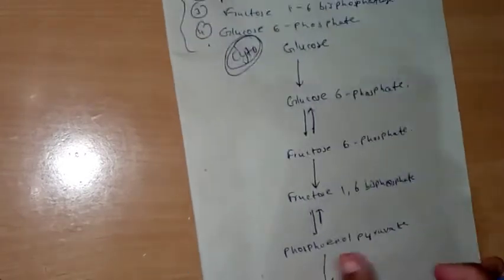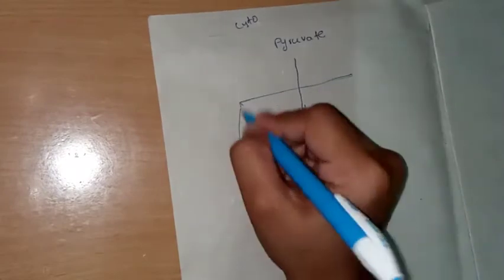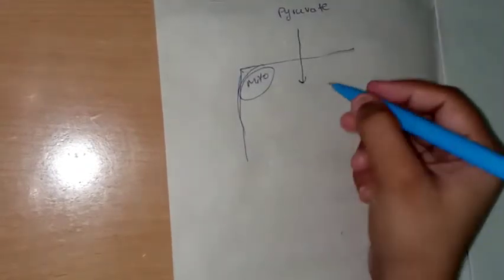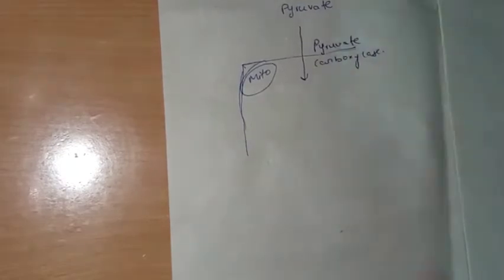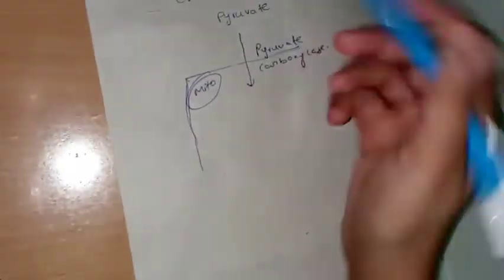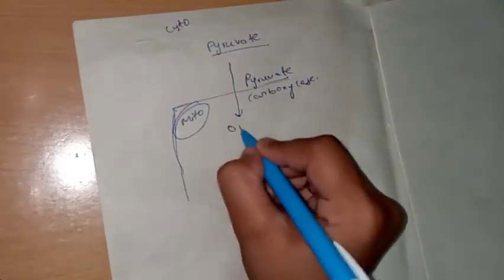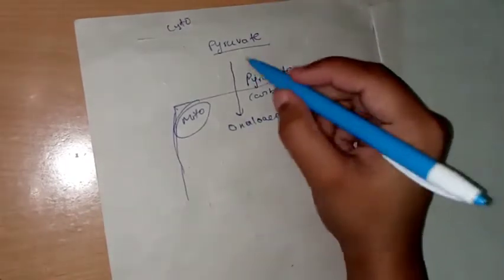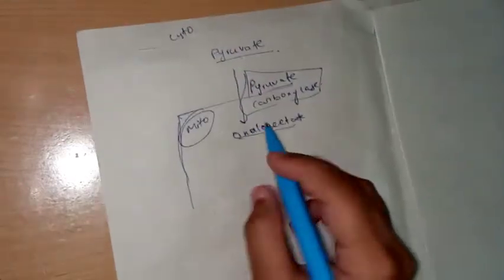The pyruvate produced in the cytoplasm must go into the mitochondria for further reactions. It is transferred to the mitochondria by the enzyme pyruvate carboxylase — this is the first enzyme. Pyruvate carboxylase is also responsible for the conversion of pyruvate to oxaloacetate within the mitochondria.